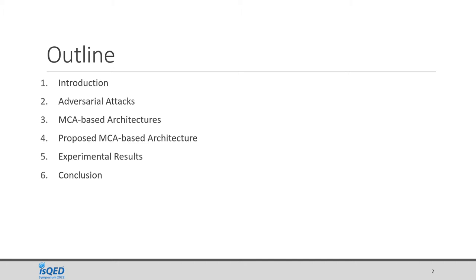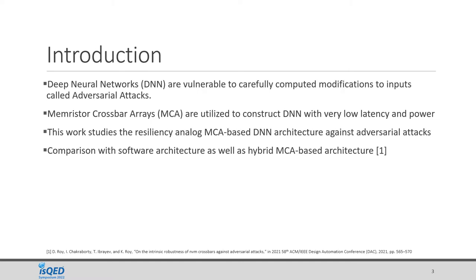Deep neural networks are everywhere — from our smartphones to home security systems, vehicles, and even hospitals. But these deep neural networks are vulnerable to carefully computed modifications to inputs known as adversarial attacks. These adversarial attacks can easily fool deep neural networks to produce incorrect results. Also, the emerging paradigm of constructing deep neural network hardware uses memristor crossbar arrays, or MCAs.